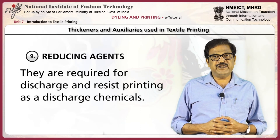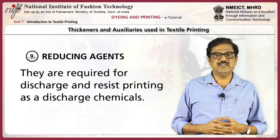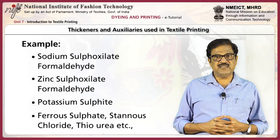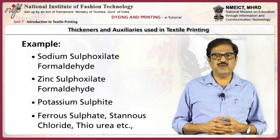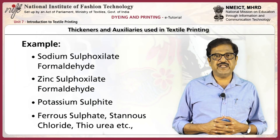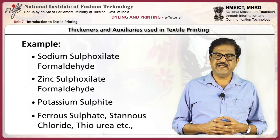Reducing agents are required for discharge and resist printing as discharge chemicals. Examples are sodium sulfoxylate formaldehyde, zinc sulfoxylate formaldehyde, potassium sulfite, ferrous sulfate, stannous chloride, and thiourea.